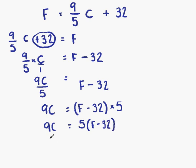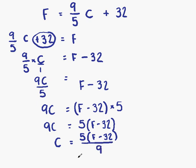We want the subject of the formula to be C, so what we want to do is move the 9. The 9 is currently multiplying C on the left-hand side; if we move the 9 to the right, it's going to divide. So we have C equals 5 bracket F minus 32 divided by 9. We now have C as the subject of our formula — C equals 5 ninths of F minus 32.